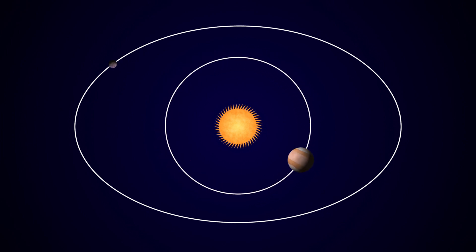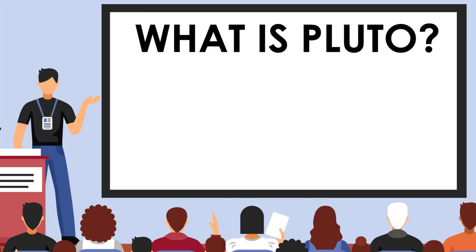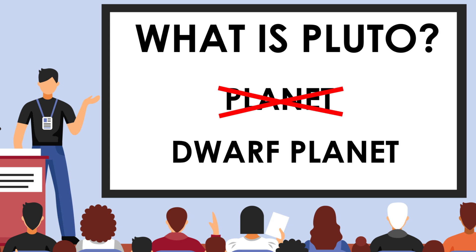Unlike all the other planets that have gravity strong enough to control the neighborhood around them, Pluto shares its orbit with many other small objects. Because of that, the International Astronomical Union stripped Pluto of its privilege to be the ninth planet in our solar system and was demoted to a dwarf planet.